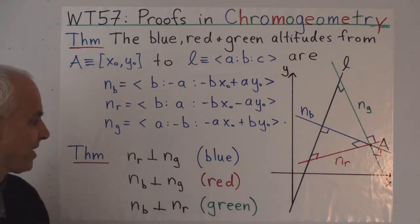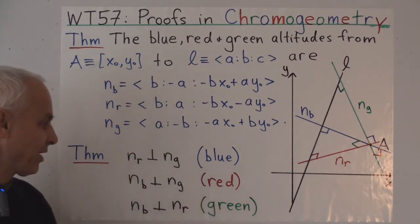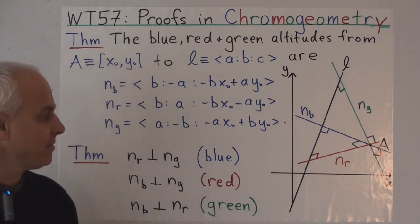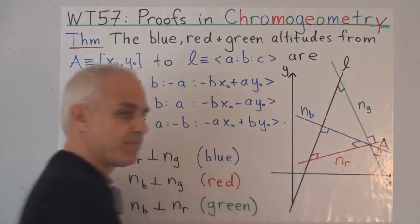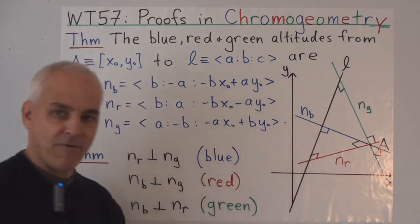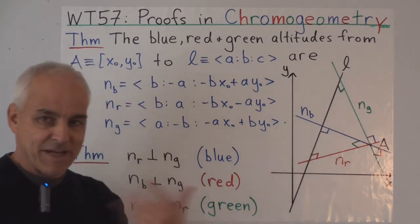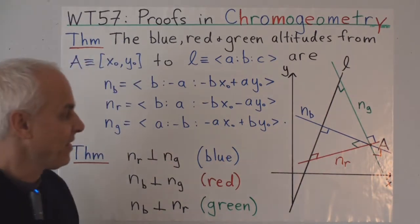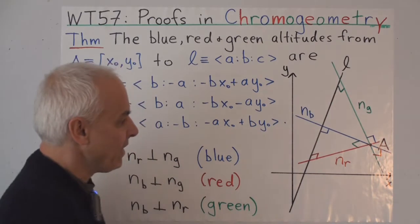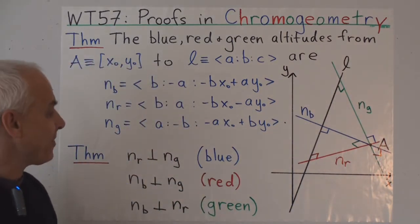But something else is true, given by this theorem: the red and green altitudes are blue perpendicular, the blue and green altitudes are red perpendicular, and the blue and red altitudes are green perpendicular. This picture contains a number of triply right triangles, which are mutually perpendicular to each other. There's a red perpendicular at one corner, blue perpendicular at another, and green perpendicular at another. If you move any of these three lines, the blue, red, and green altitudes form another triply right triangle.